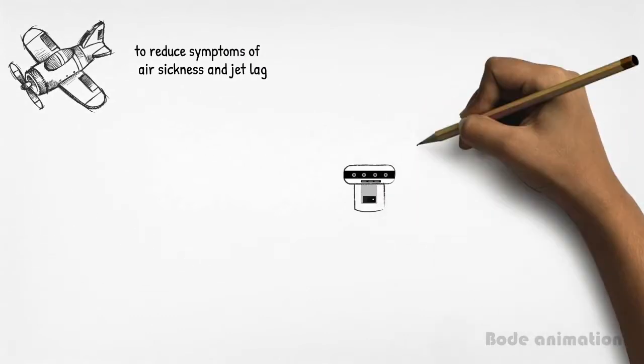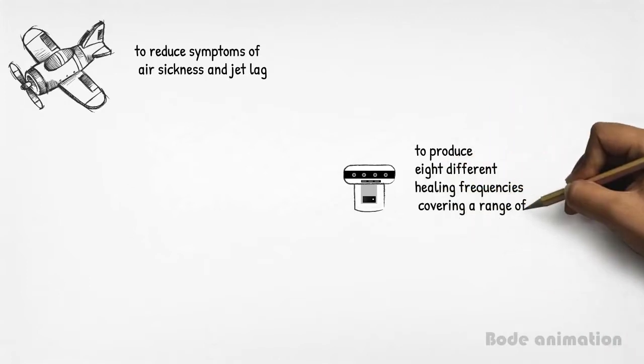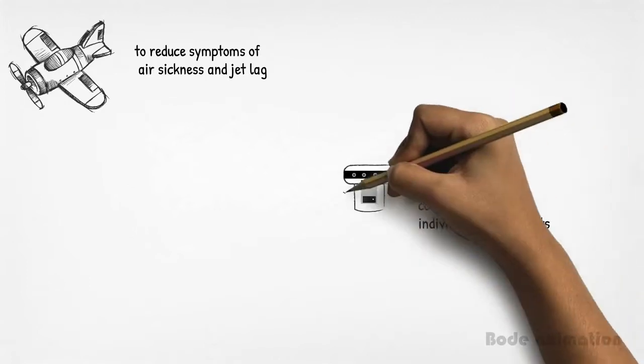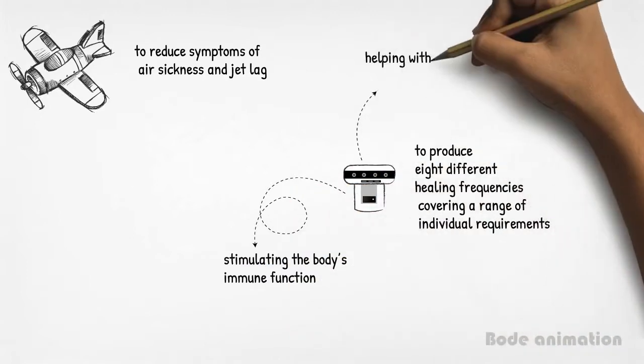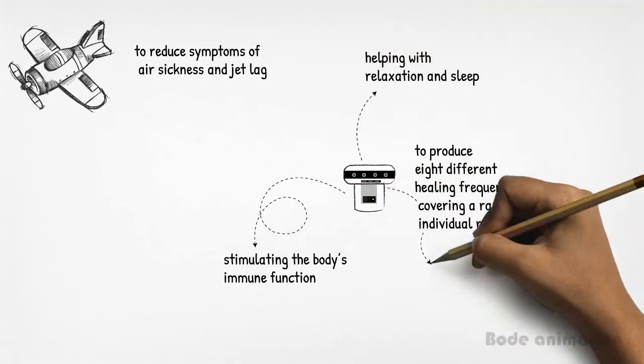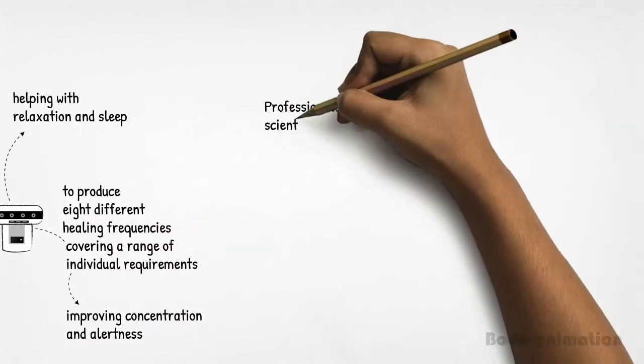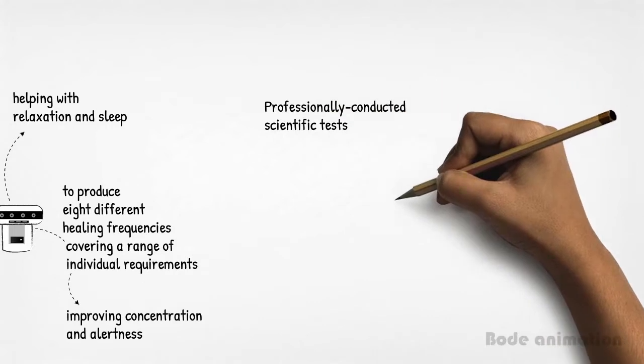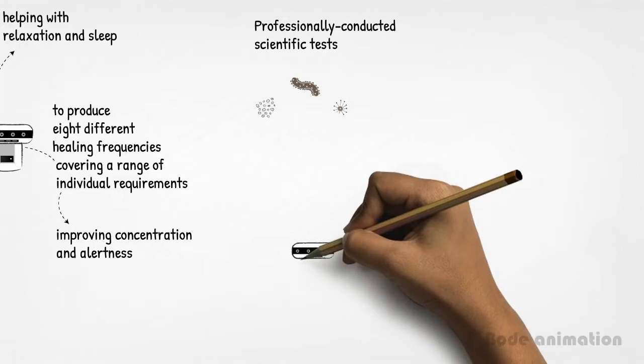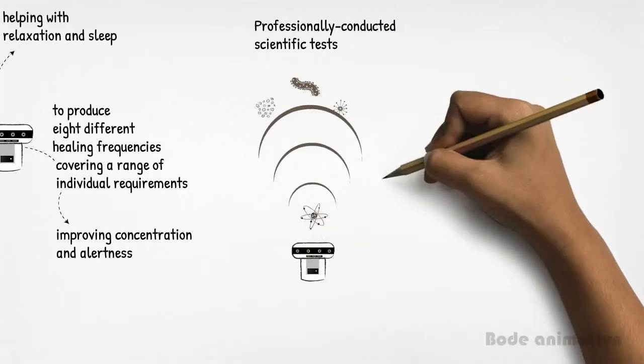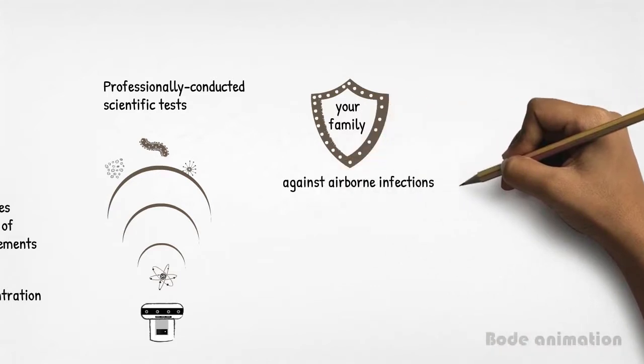In addition, the Elanra can be programmed to produce eight different healing frequencies covering a range of individual requirements, such as stimulating the body's immune function, helping with relaxation and sleep, improving concentration and alertness. Professionally conducted scientific tests have also shown that airborne bacteria plus other harmful microorganisms are easily eliminated with Elanra's negative ions, safeguarding your family against airborne infections.